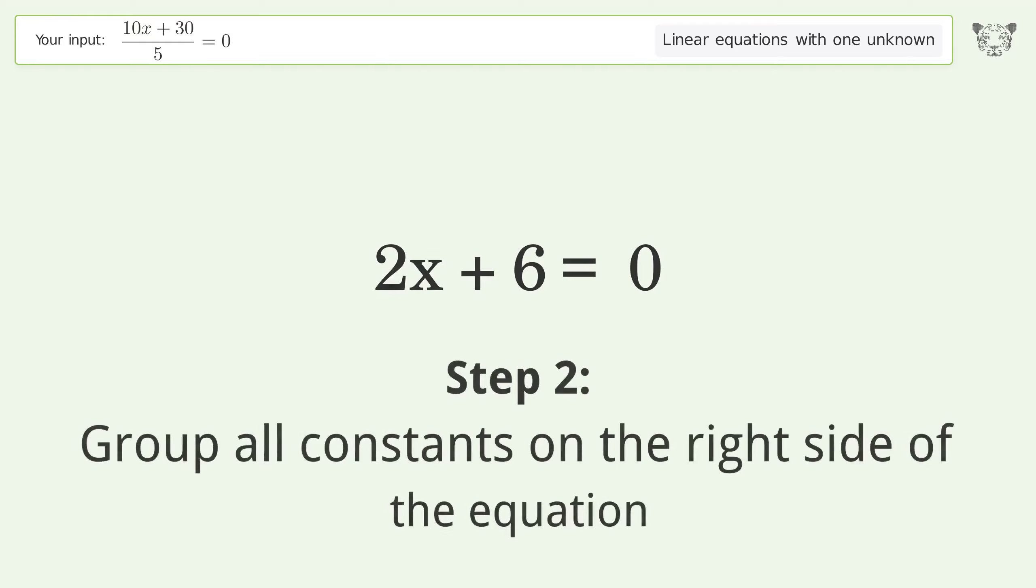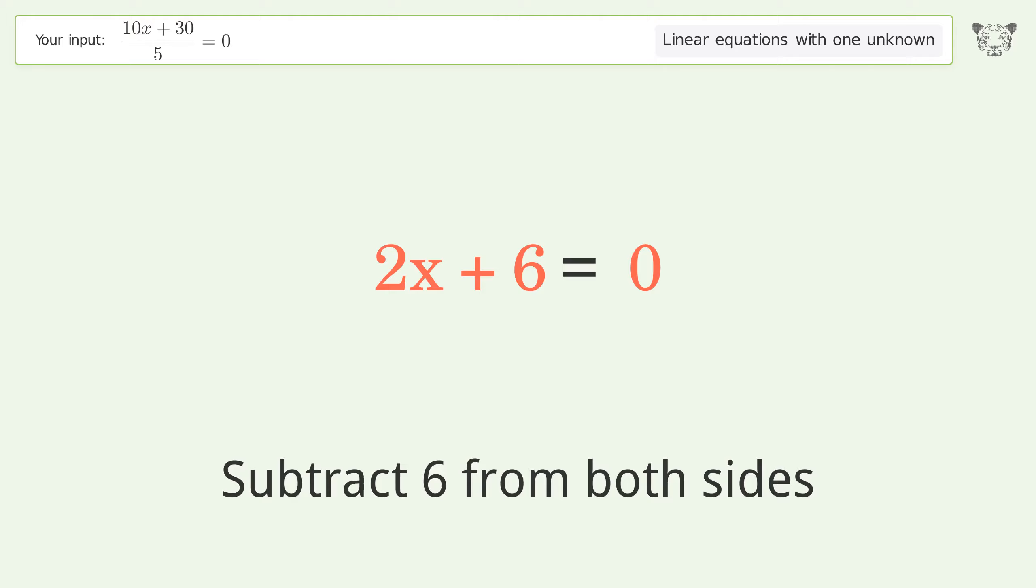Group all constants on the right side of the equation. Subtract 6 from both sides.